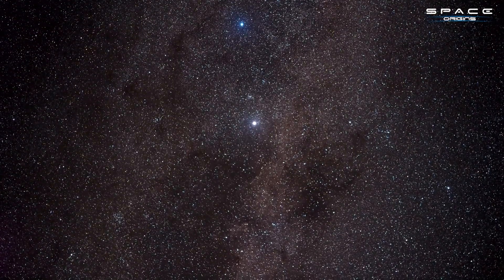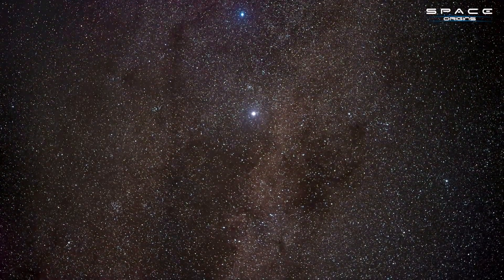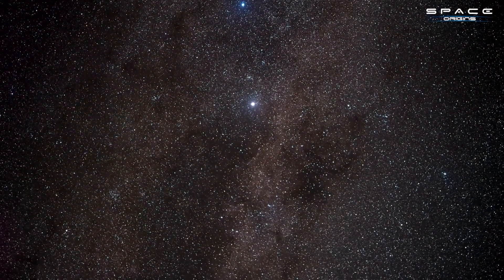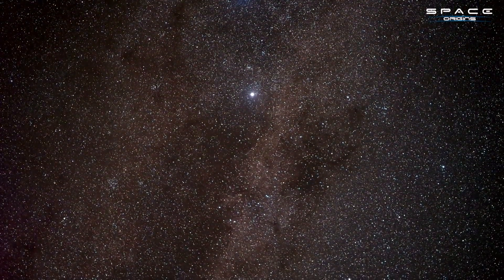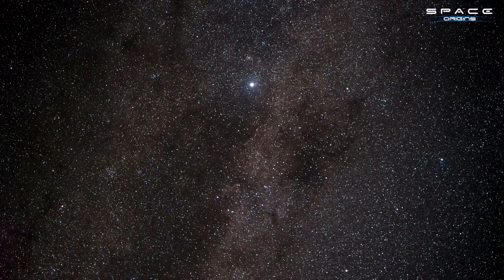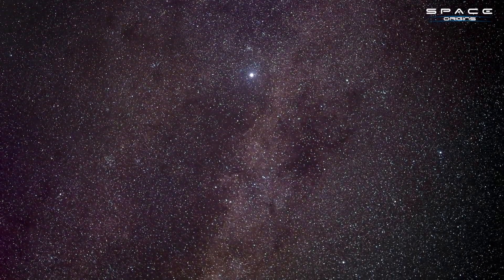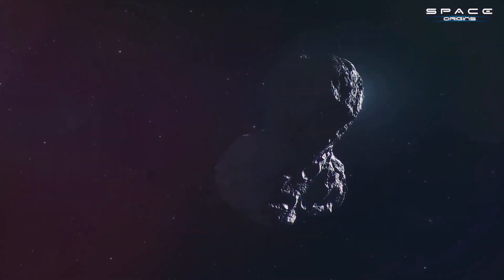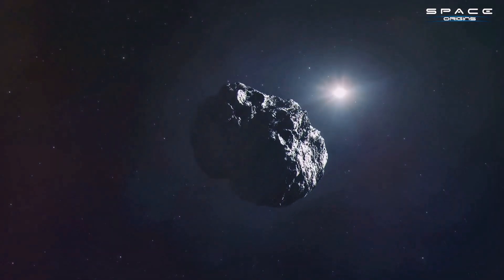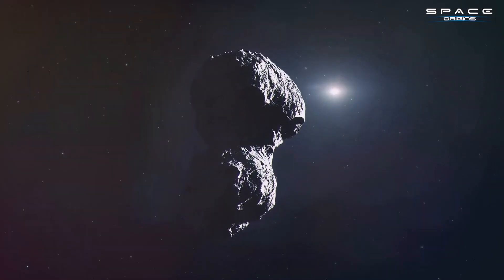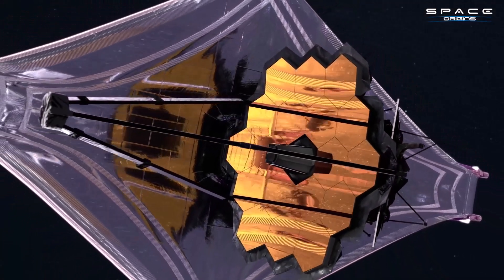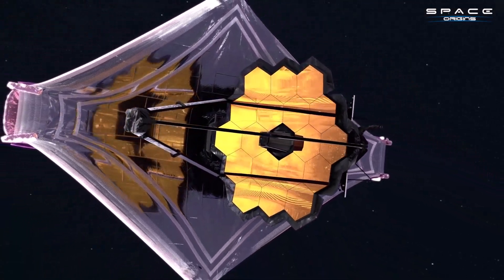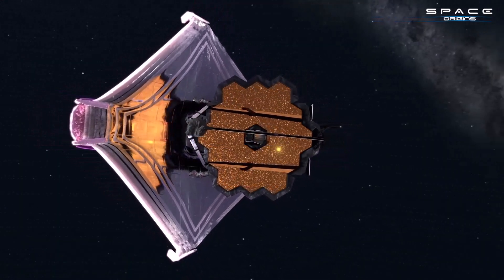This discovery is a testament to the JWST's remarkable ability to observe not just the grand cosmic spectacles, but also the subtler, smaller celestial bodies that often go unnoticed. It's a reminder that in the vast expanse of space, even the smallest of objects can hold big secrets. This finding underscores the JWST's exceptional ability to detect even the smallest celestial bodies.